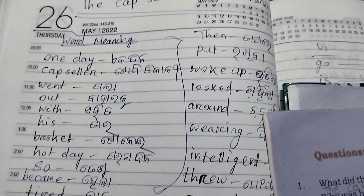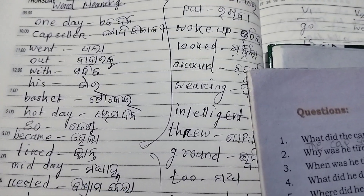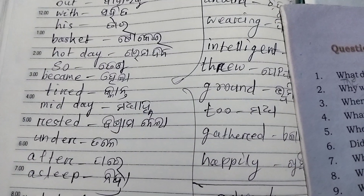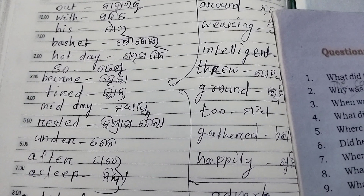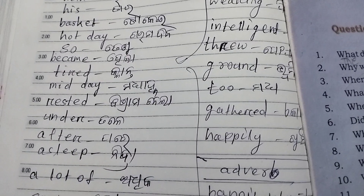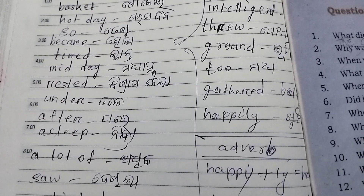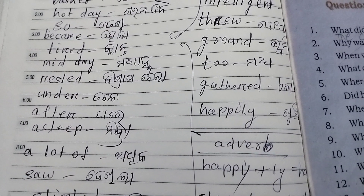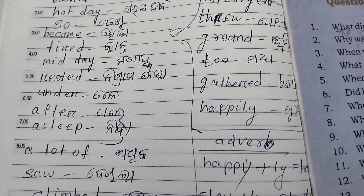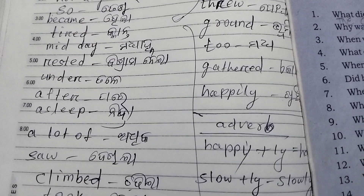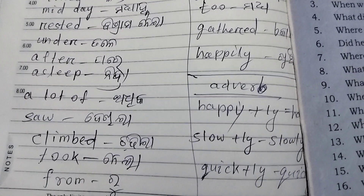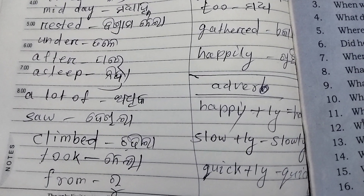What meaning? One day, a cap seller tropically went. Out, it was a hot day. So he became very tired. At midday he rested, under a tree, then fell asleep. A lot more — he climbed, took.